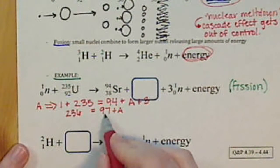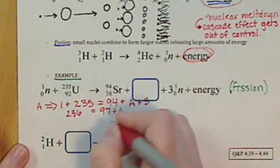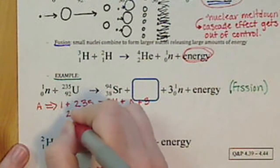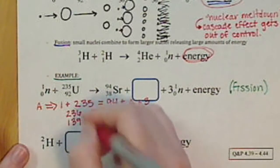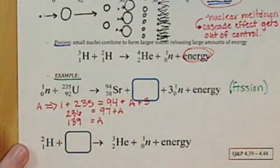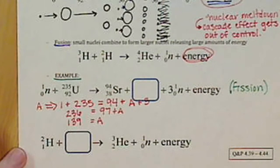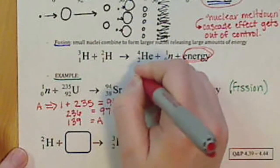So we subtract 97 and we get 139. So that's our A, that is our mass number for our symbol. So we have 139.